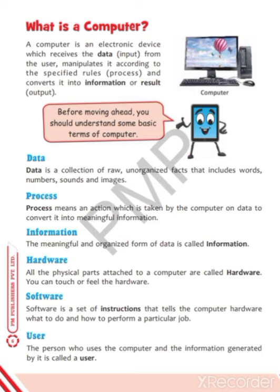After that, what is process? Process means an action taken by the computer. As I gave you an example in class — when we have some oranges and we want juice, the juicer processes the oranges and makes the juice. At that time, the juicer is our processor. In the same way, in our computer, the CPU performs the work of processing. All the work is done by our CPU. CPU is also known as a processing device, as well as the brain of the computer.